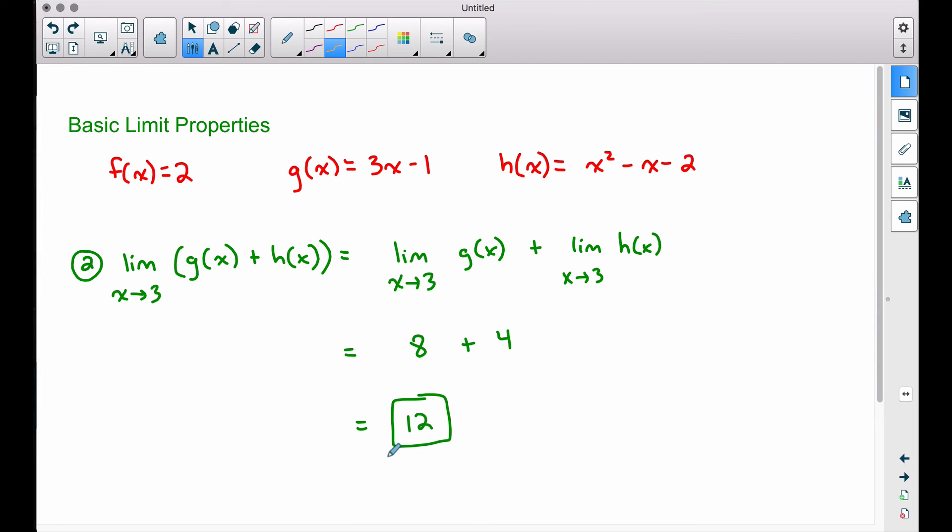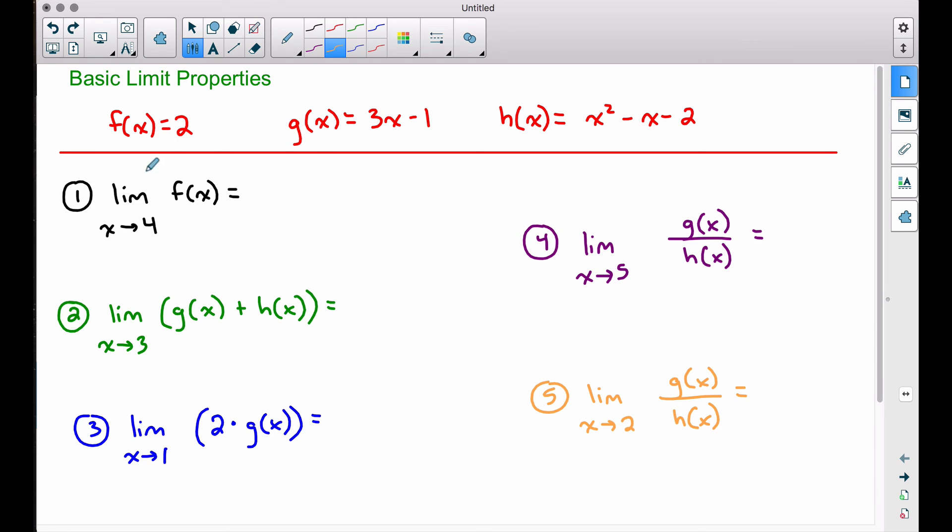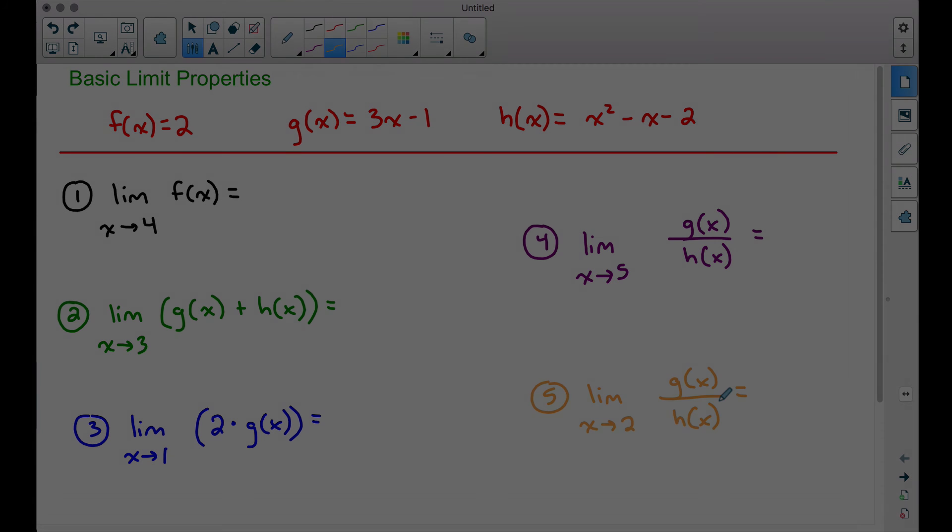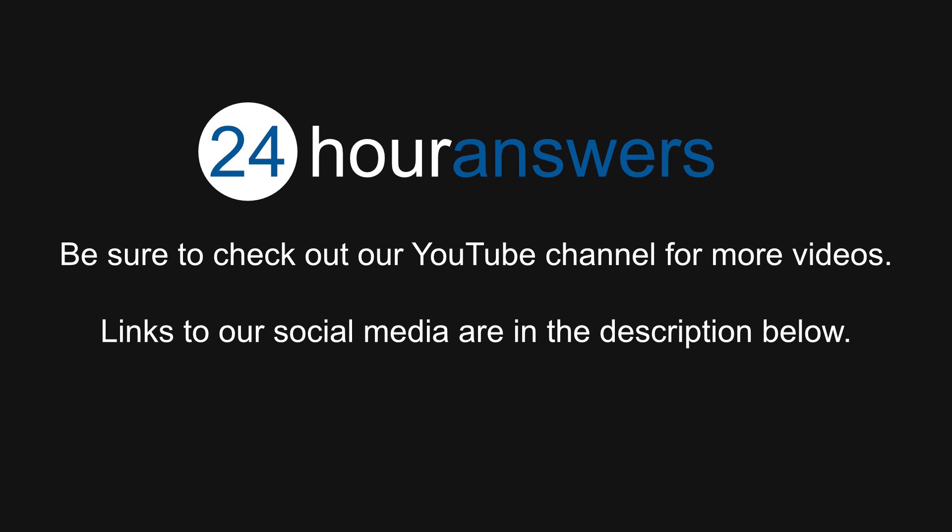And there you have it, five examples covering some of the basic properties of limits. One of the key things not to forget here is that very first one, the limit of a constant is the constant. Constants come up a lot in calculus, especially when we get into differentiation. There's a rule you want to remember there for derivative. But for now, I want to get the idea across that limits do work the way you think they should work. Direct substitution works great. Just keep an eye out for denominators that are zero. And again, we'll cover that more in a future tutorial. And that's it for this video. I hope it helped. Be sure to check out our YouTube channel for more videos.